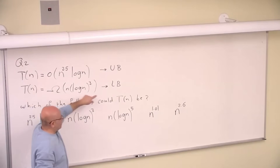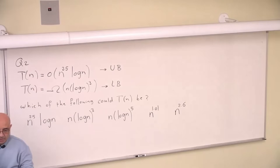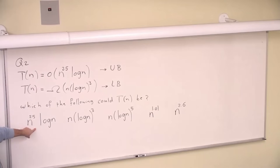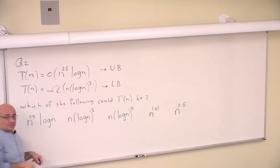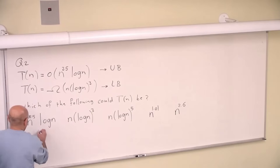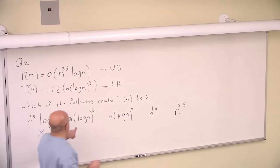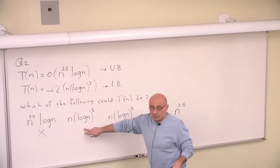This is an inclusive lower bound. So could it be this? No, because this is exclusive. So it can't be this. How about this? Yes, this is the lower bound.